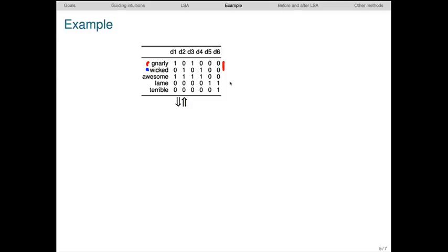This toy matrix here reflects these intuitions, in that neither of the terms gnarly or wicked occurs with the other, but both co-occur with awesome, and neither of them co-occurs with lame or terrible.